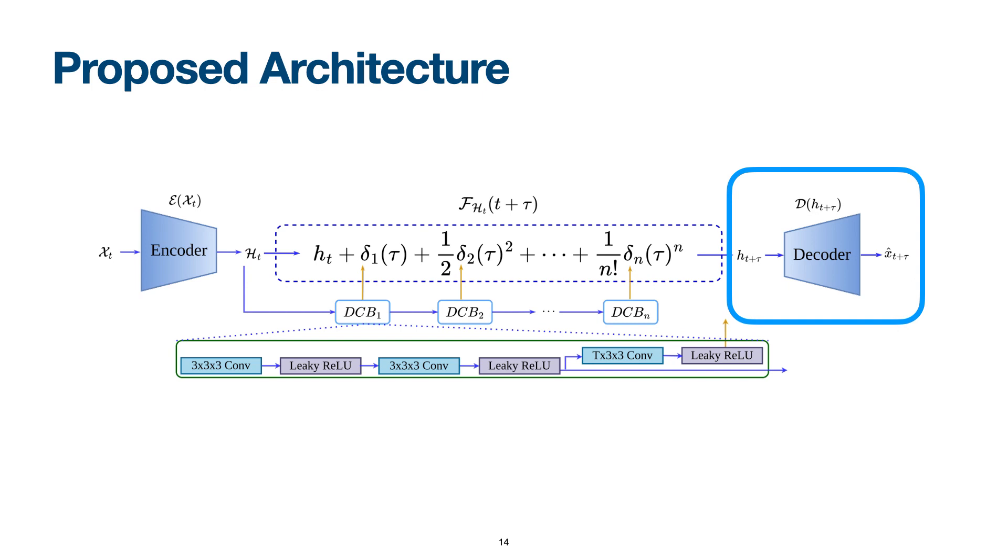The decoder is a convolutional neural network that consists of six convolutional layers. It decodes the embedding and predicts the future frame at time t plus tau.